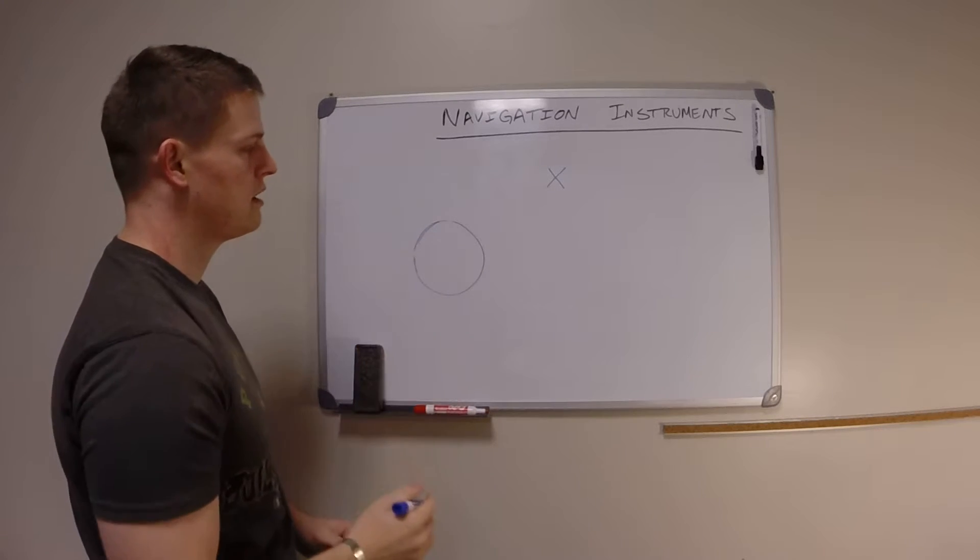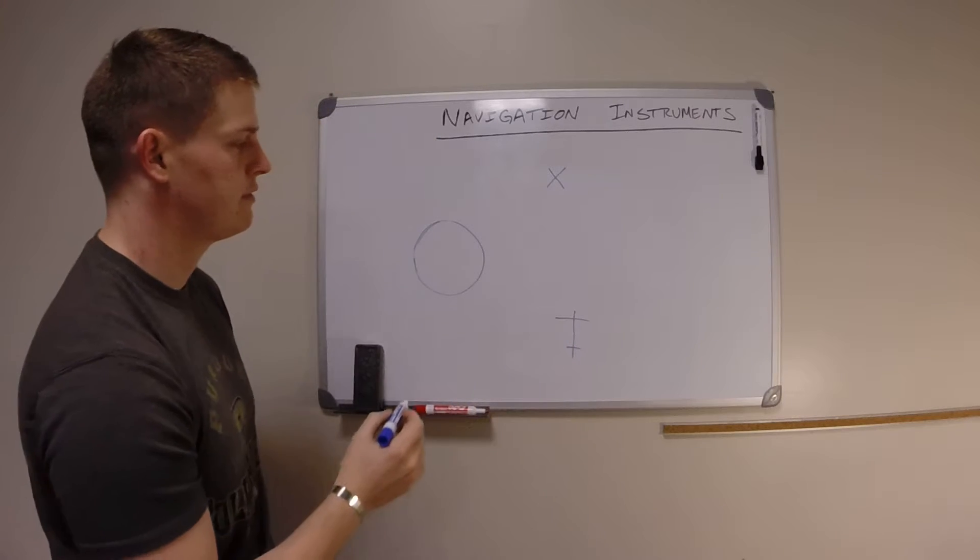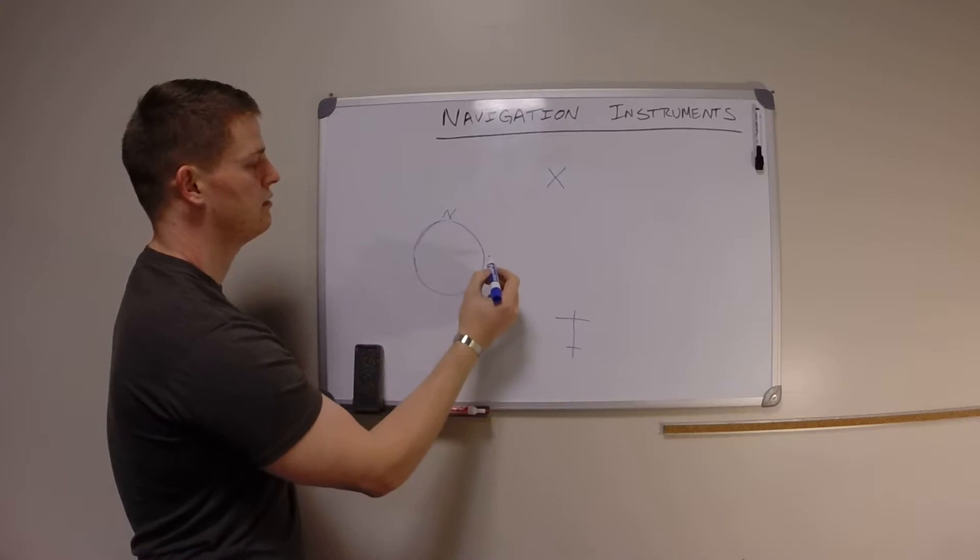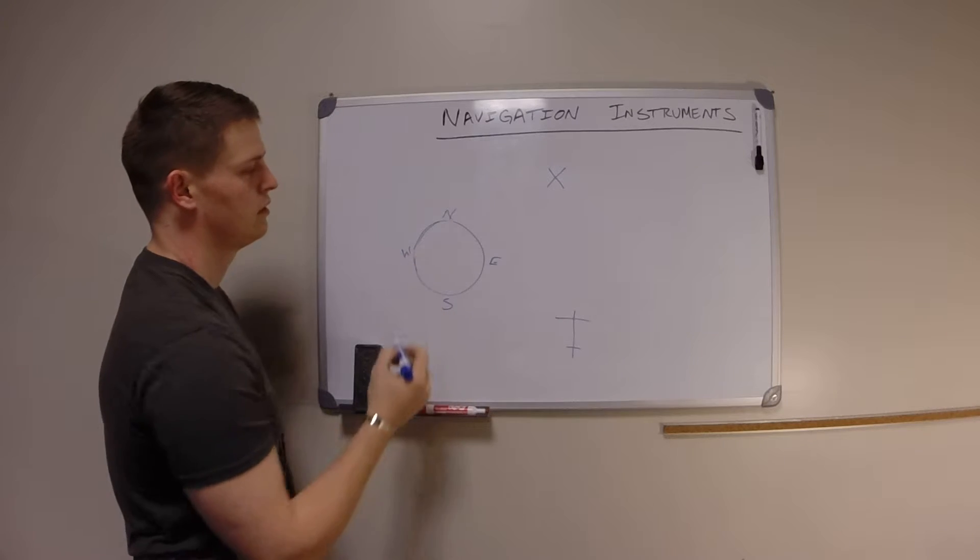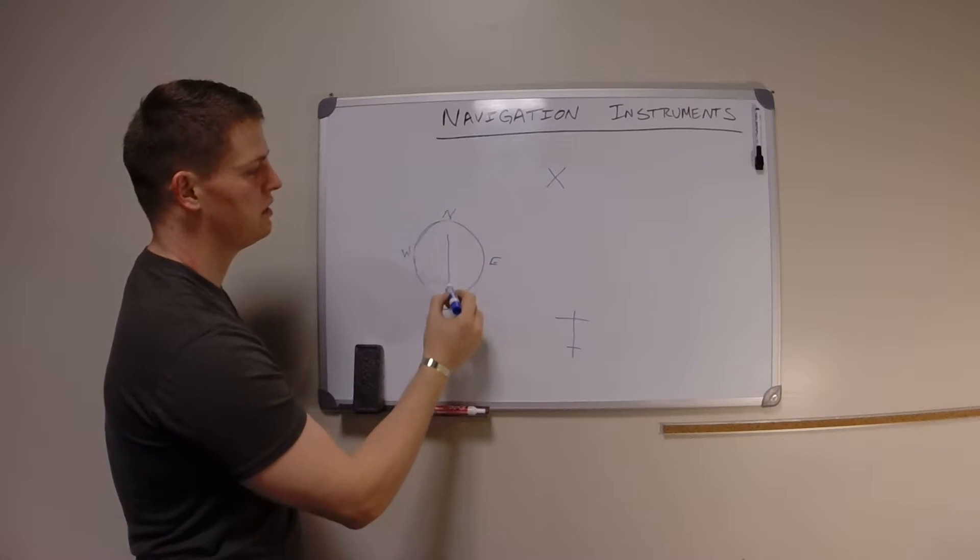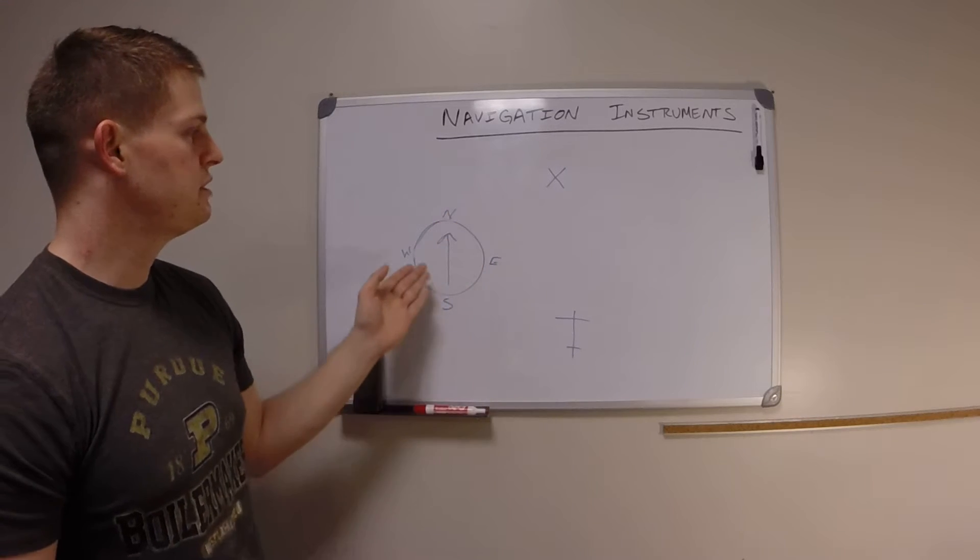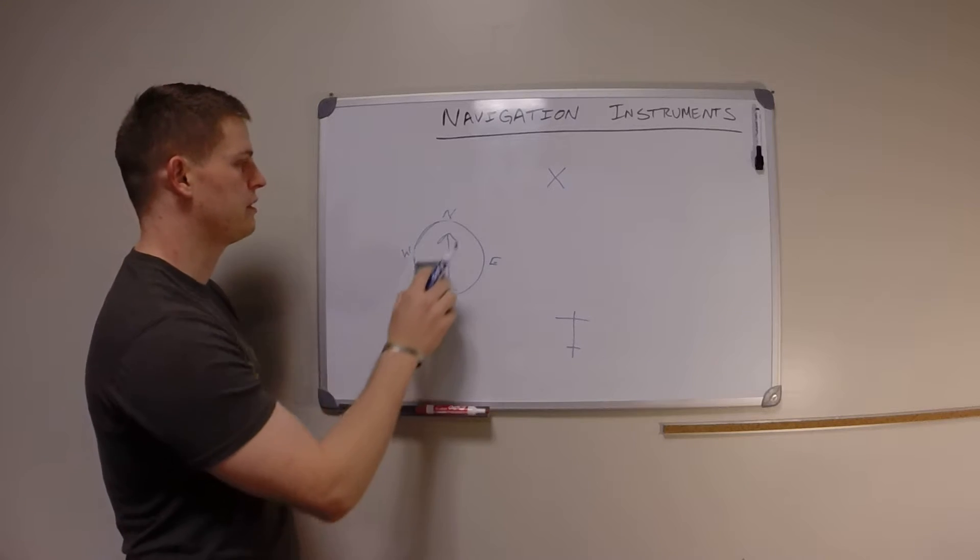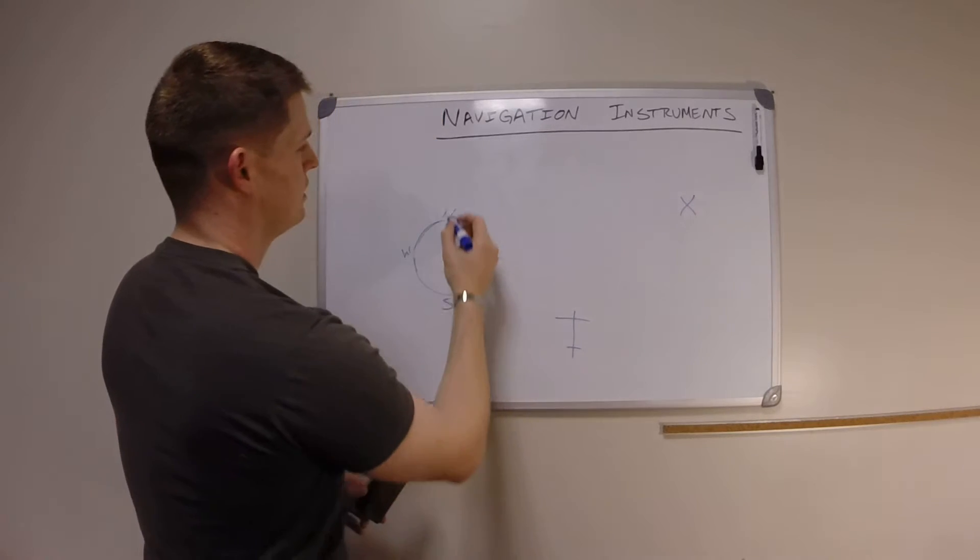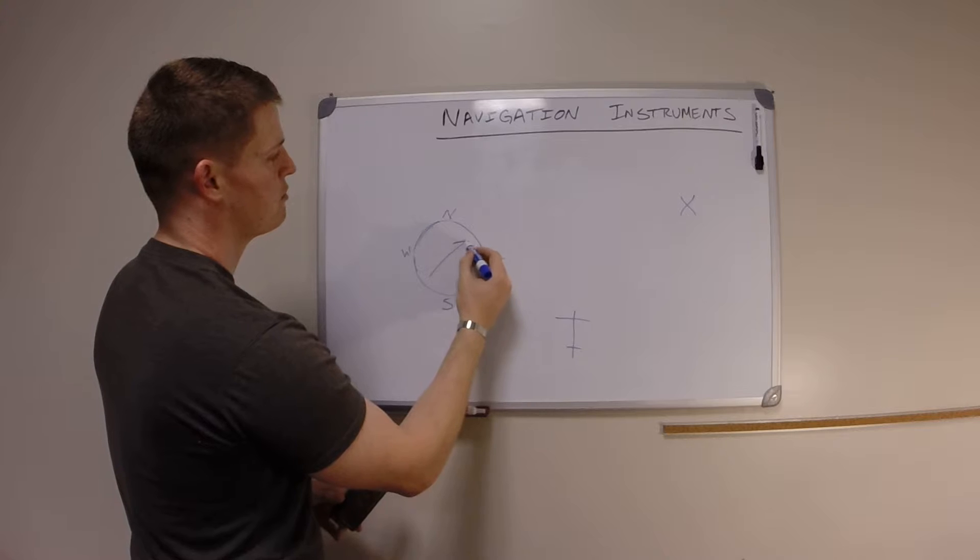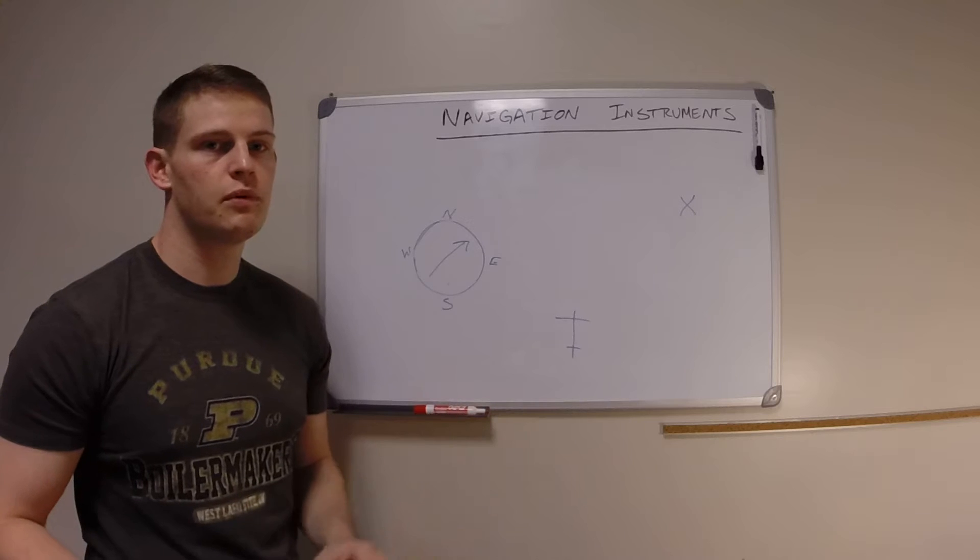Also within the ADF, there is what's called a bearing pointer, and this will always point at the station that you have tuned in. So in this case, if we have this station tuned in, it's going to point directly at it, which is directly to the north. If the station were over here somewhere, even though we're still facing north, now the bearing pointer will point to the northeast where the station is. So it's really actually very simple—it's always going to point just directly at it.